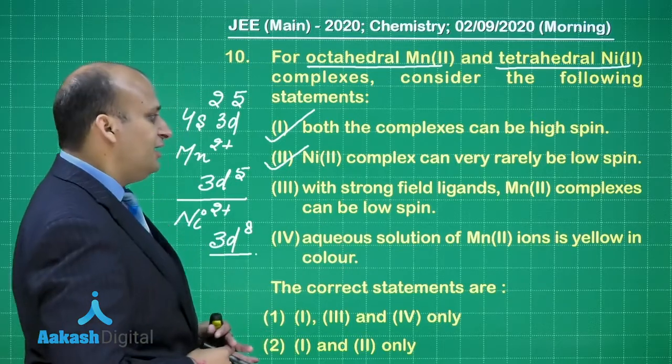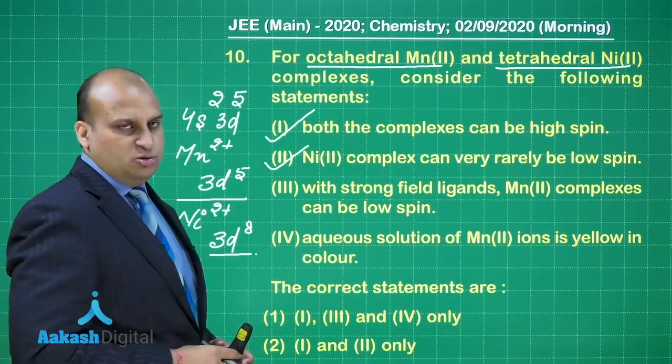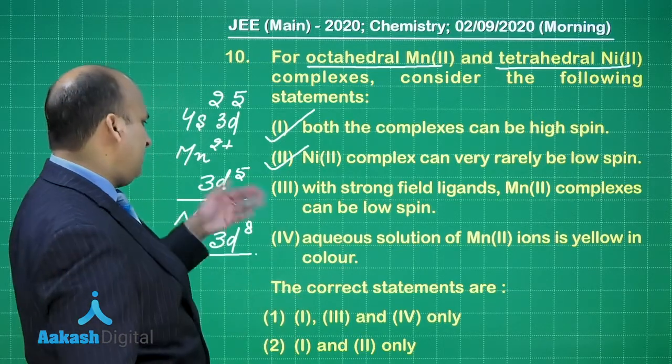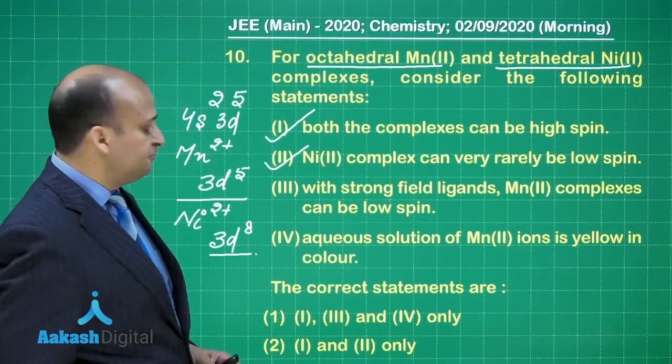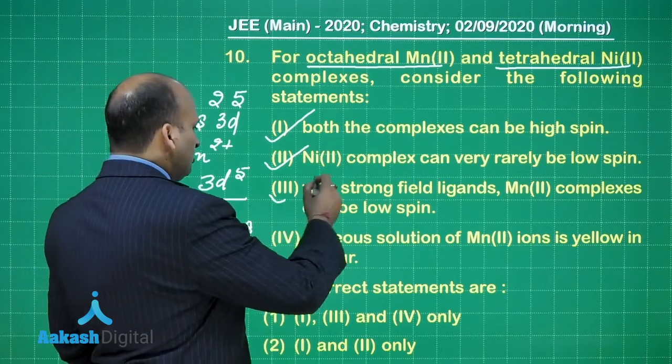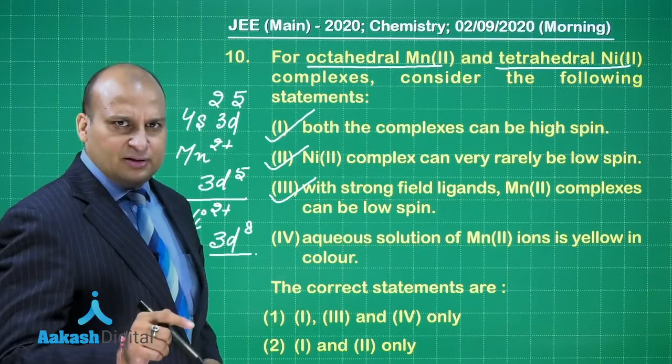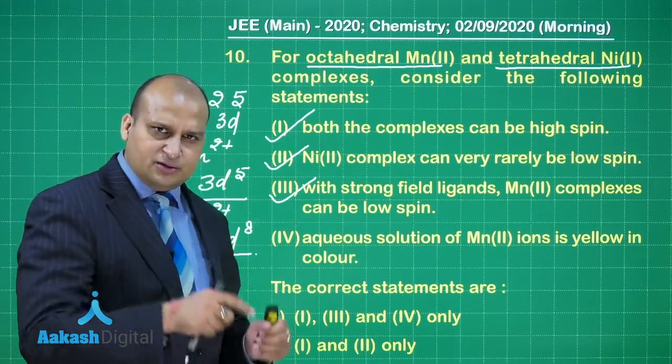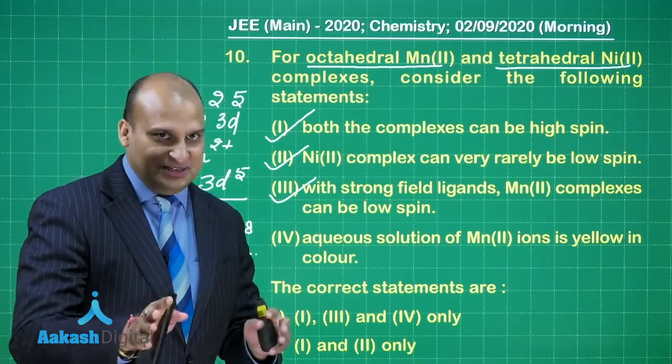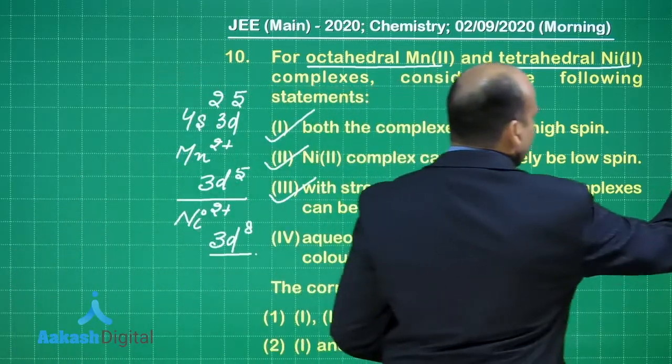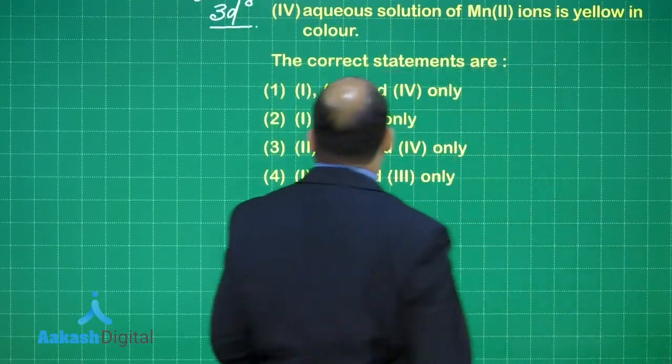So it can be only a rare chance that it can be a low spin complex or the pairing of the electron may take place. Third statement is with strong field ligands, Mn2+ complex can be low spin, yes, agreed upon because the pairing will take place in the case of Mn2+. So this is also right. Generally it happens that if there are 4 statements and first 3 are right, 4th is wrong, but it is generally.